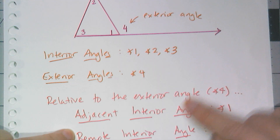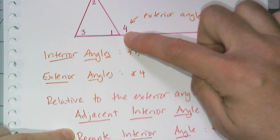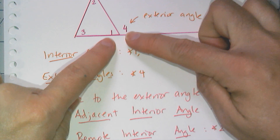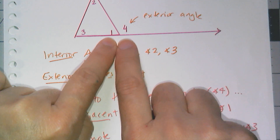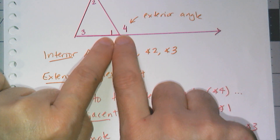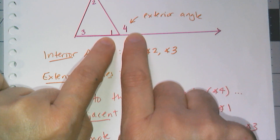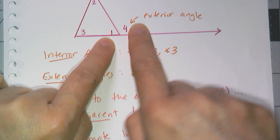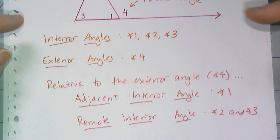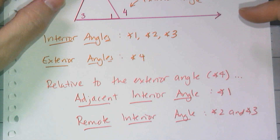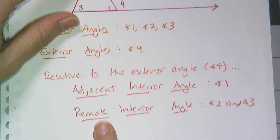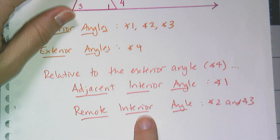Relative to angle four, the adjacent interior angle is angle one — it's the one that forms a linear pair with the exterior angle. And then angles two and three, which are the other two angles, are called remote interior angles.